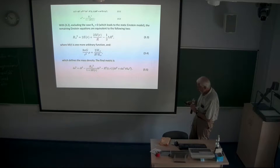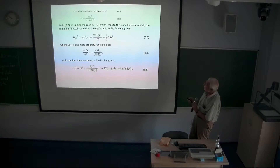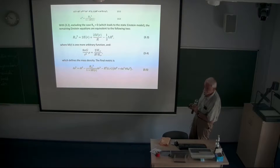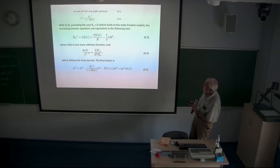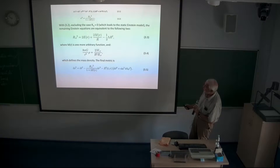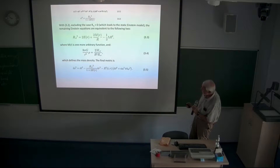If we assume that the time derivative of capital R is non-zero — the case when it's zero leads to the static Einstein model — the remaining Einstein equations are equivalent to two equations. M is another integration constant, an arbitrary function of the R coordinate. The other equation defines the mass density, and this is the final metric.